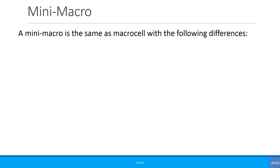There is also the concept of a mini macro. People often discuss whether a mini macro is a small cell or a macro. A mini macro is the same as a macro with the following differences: it generally has a single sector, though there could be two.